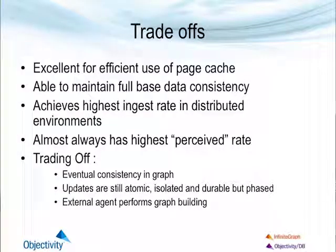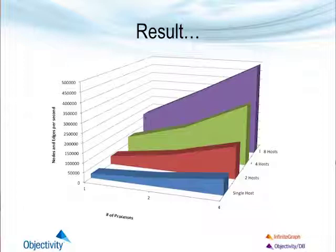The trade-off is: you see a very high perceived ingest rate. Clients are not blocked — nodes and edges go straight into the database. However, the trade-off is consistency: as you're doing a navigation, you may not necessarily see an edge that was added a couple of milliseconds ago. The important thing here is choice, and the result is a nicely horizontal, scalable ability to push data into the database.